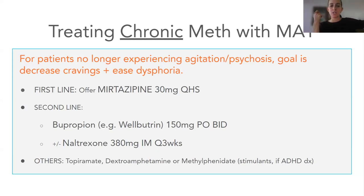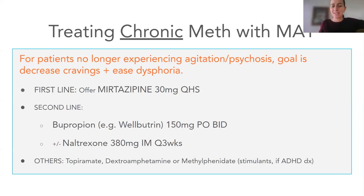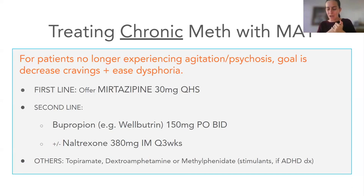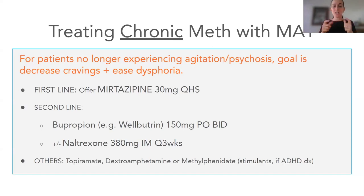First-line in most situations: mirtazapine 30 milligrams QHS — that's going to work well for most patients. Bupropion can be a good second-line option if a person doesn't want the sedating effect of mirtazapine or is worried about weight gain. Bupropion can also give a stimulant-like boost, which is nice for people who use meth for that effect — the only contraindication is seizures. You can pair bupropion together with naltrexone, which increases efficacy. That combination is particularly useful if somebody is having unintentional fentanyl contamination leading to overdose, or if they also have an alcohol use disorder.